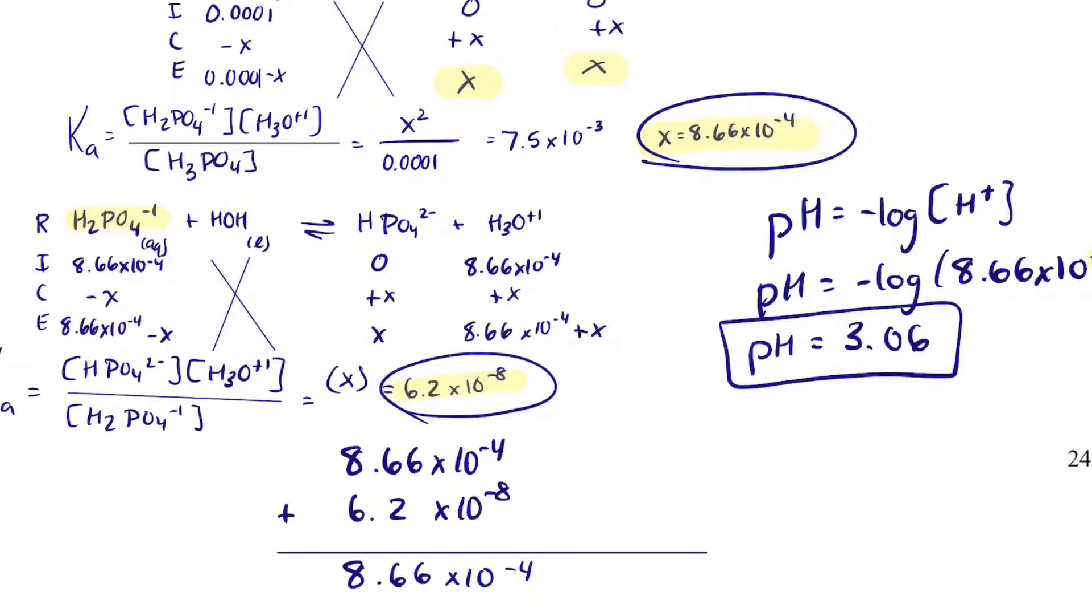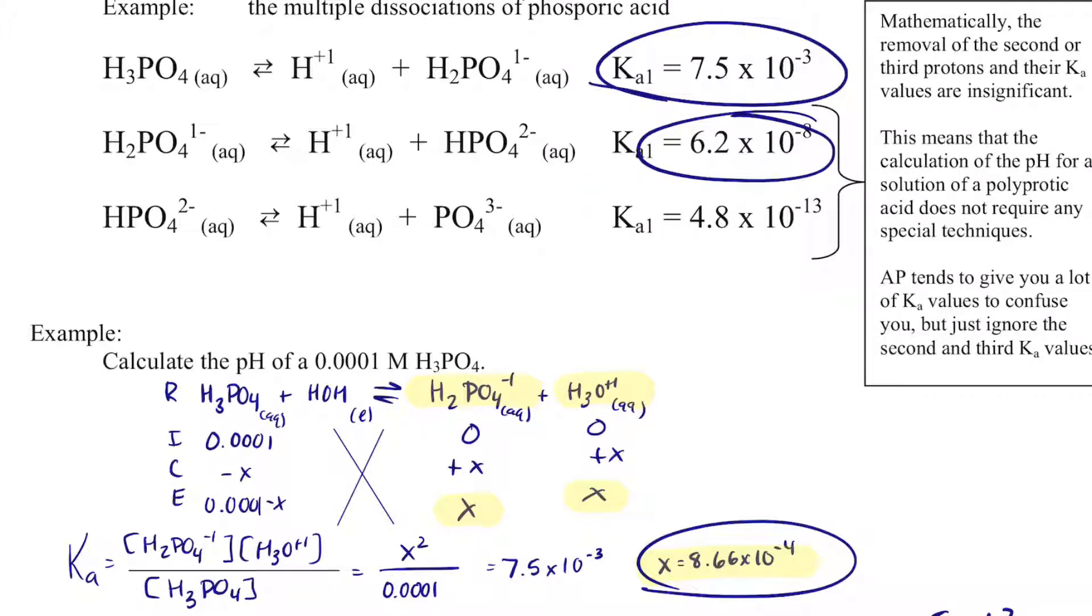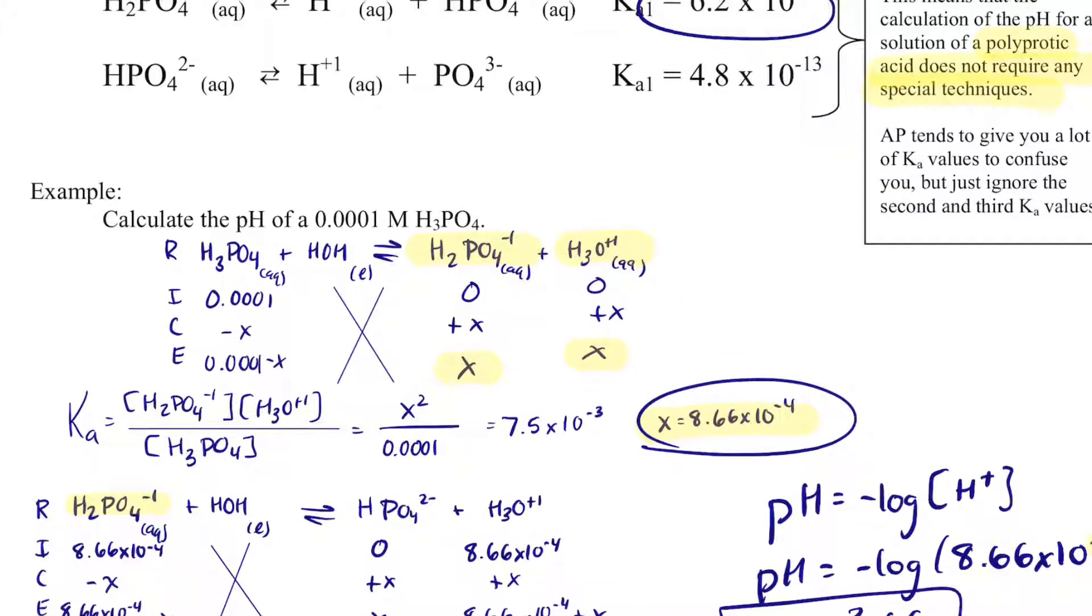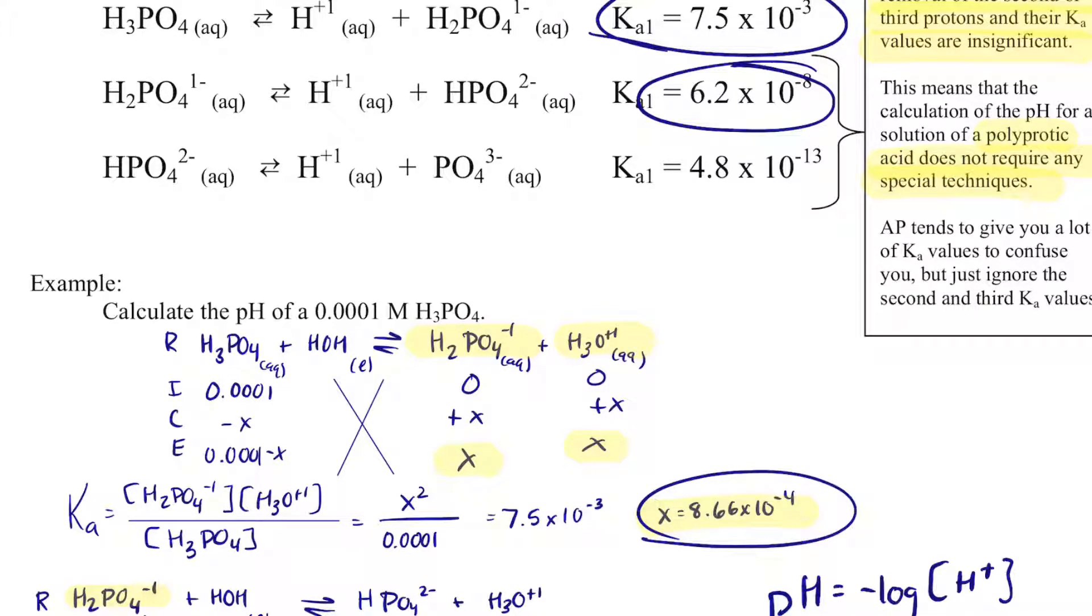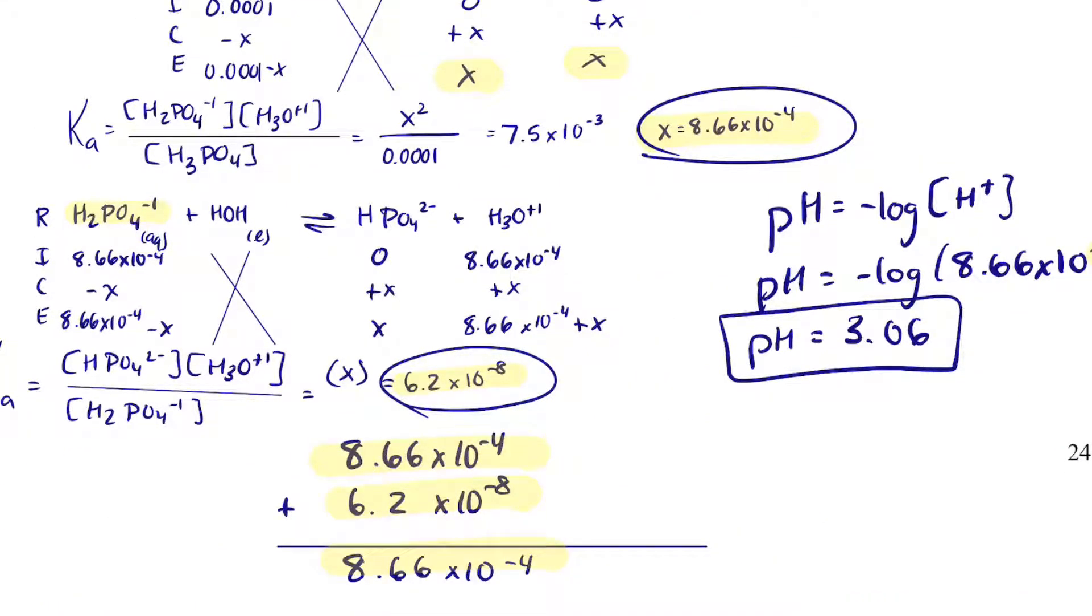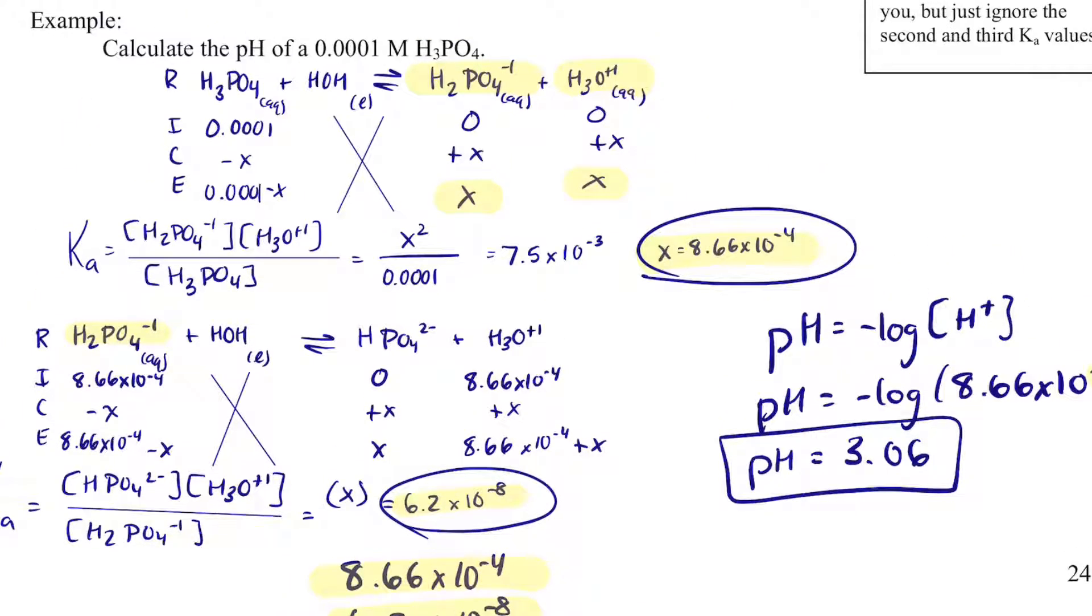So what this set of notes is trying to prove is that mathematically, the removal of the second or third protons and their Ka values, they're just insignificant. And so even if you have a polyprotic acid, you don't have to do anything special. Just do the first Ka because we just proved this Ka2 and this Ka3 is going to be so much smaller when we solve for H plus that mathematically, unless we go out a whole bunch of sig figs, it's just going to be insignificant. Okay, so AP will tend to give you a whole bunch of Ka values just to confuse you, but just ignore anything that is not the first Ka value.